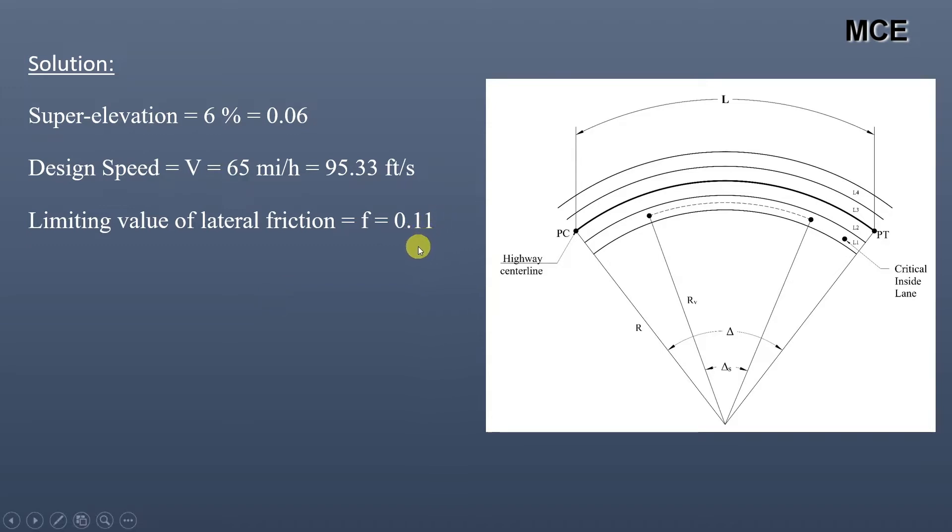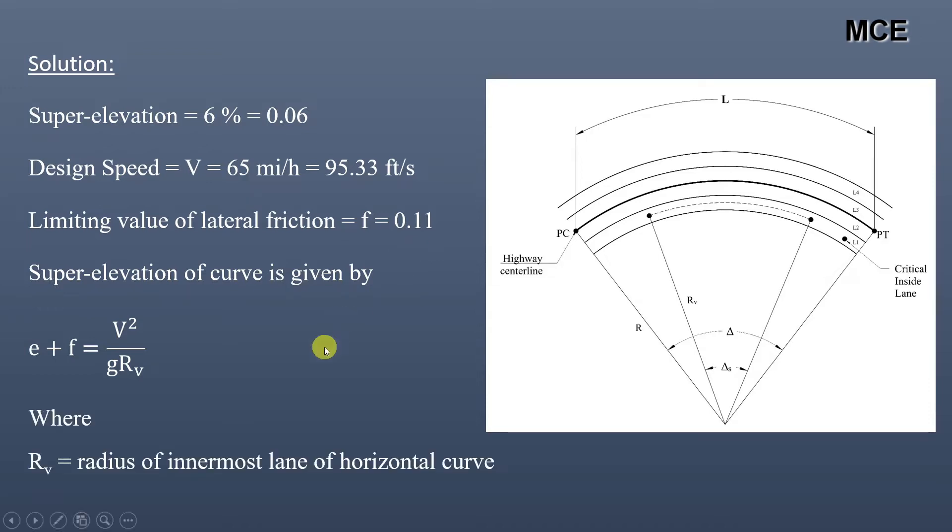Super-elevation of the curve is given by e + f = V²/(g × Rv), where Rv is the radius of the innermost lane of the horizontal curve. You can see from the figure that Rv is the radius of the innermost lane.